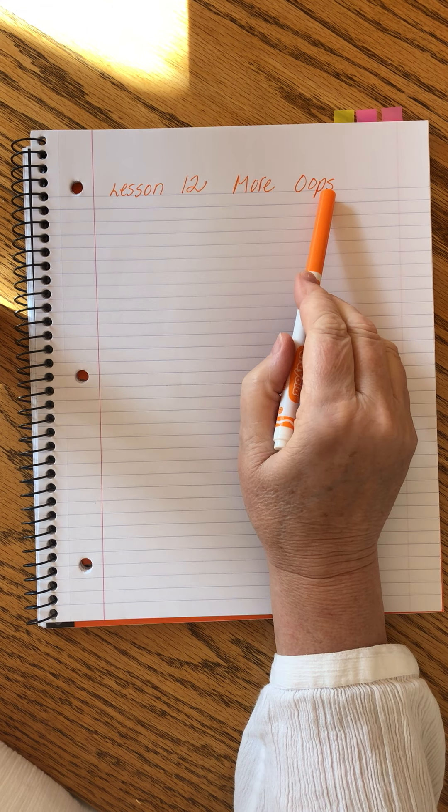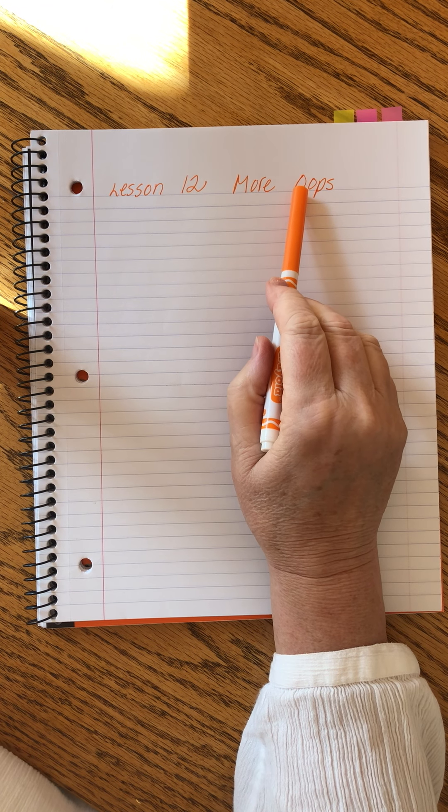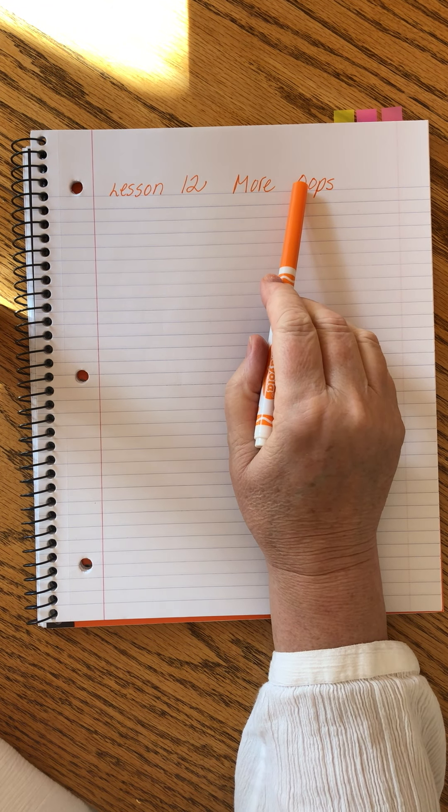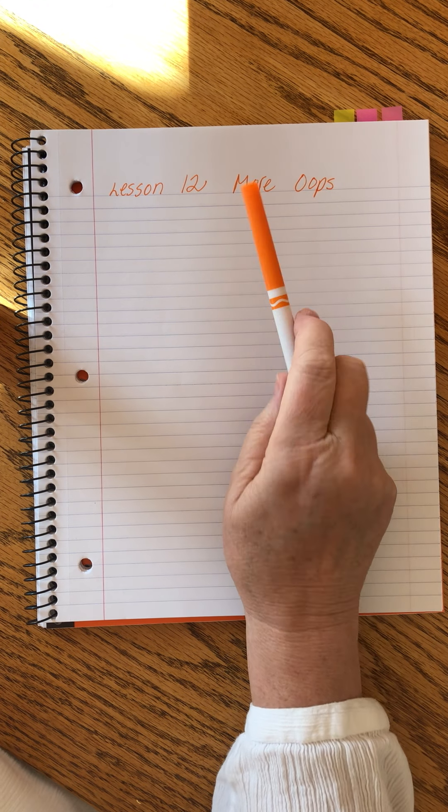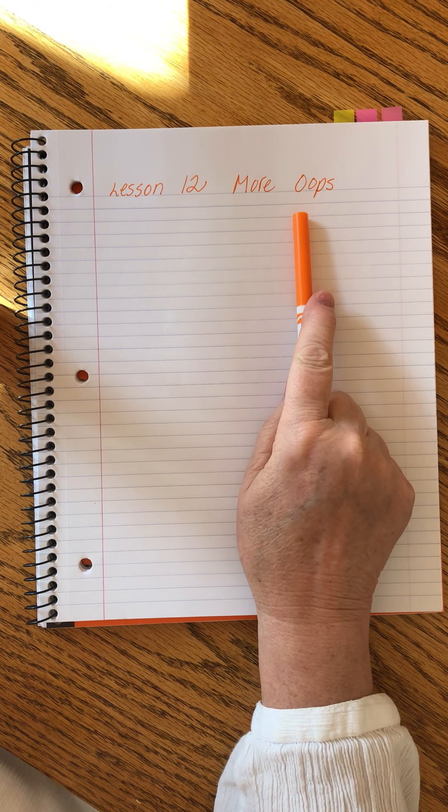Our topic today is order of operations. You can always tell when I made up my own topic name. I usually use whatever John calls it, but sometimes his names are just boring and I feel like there's a better way to say it. We're doing more order of operations.